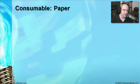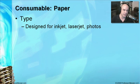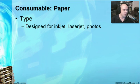A very common consumable for printers is paper. There are many different types — paper specifically designed for inkjet printers, paper specifically designed for laser jets, and specific photo paper. That's because these different printing technologies put different kinds and amounts of ink onto the paper and they dry in different ways. So the paper really does help a lot if it's designed for that specific printer type, so your inkjet output doesn't come out smeared and your laser jet fuses properly.